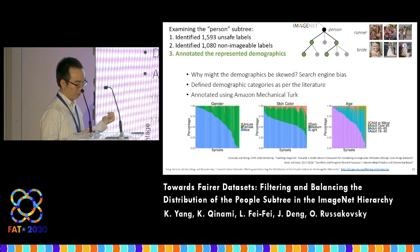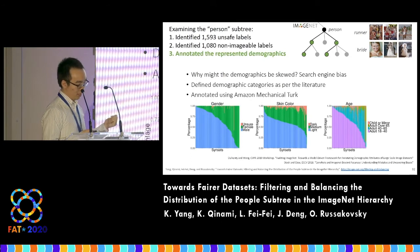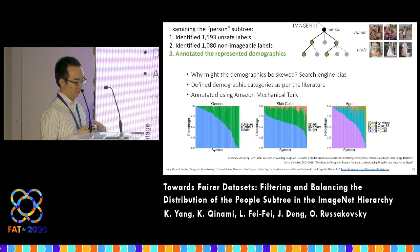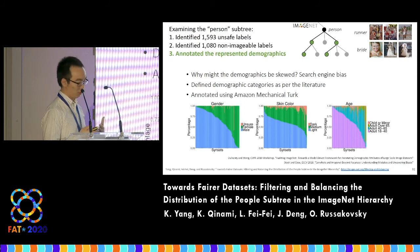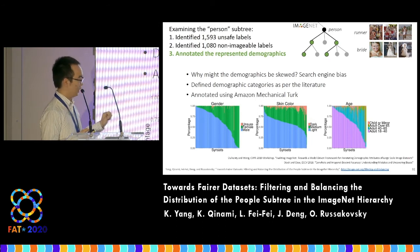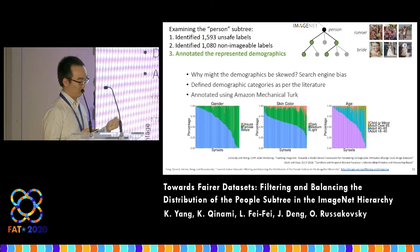Scuba diver and birth. These two labels have a significant number of instances whose gender cannot be identified. It's difficult to infer the gender of a person in a scuba suit or the gender of a newborn baby. The skin color and age annotation shows similar imbalanced demographics.